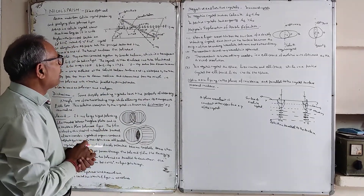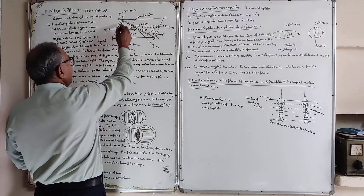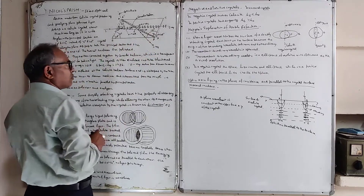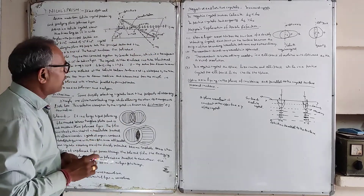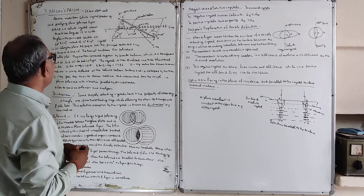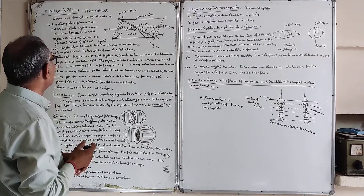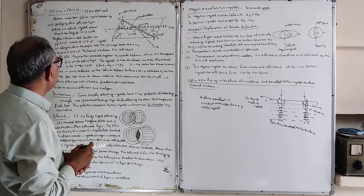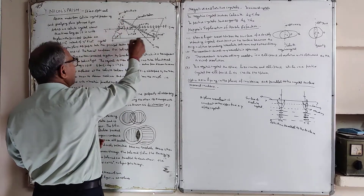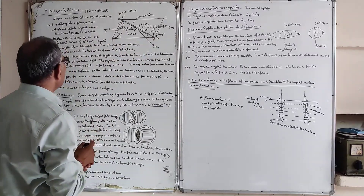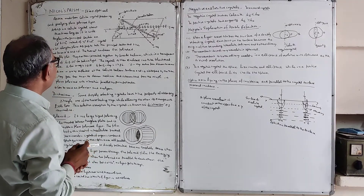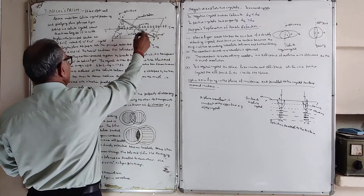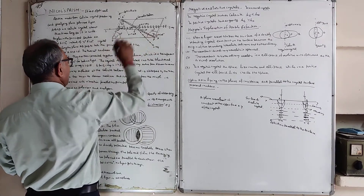We have to grind this prism so that the angle becomes 68 degrees and the other becomes 112 degrees, instead of the original 71 and 109 degrees. The calcite crystal ABCD is about three times as long as it is wide.